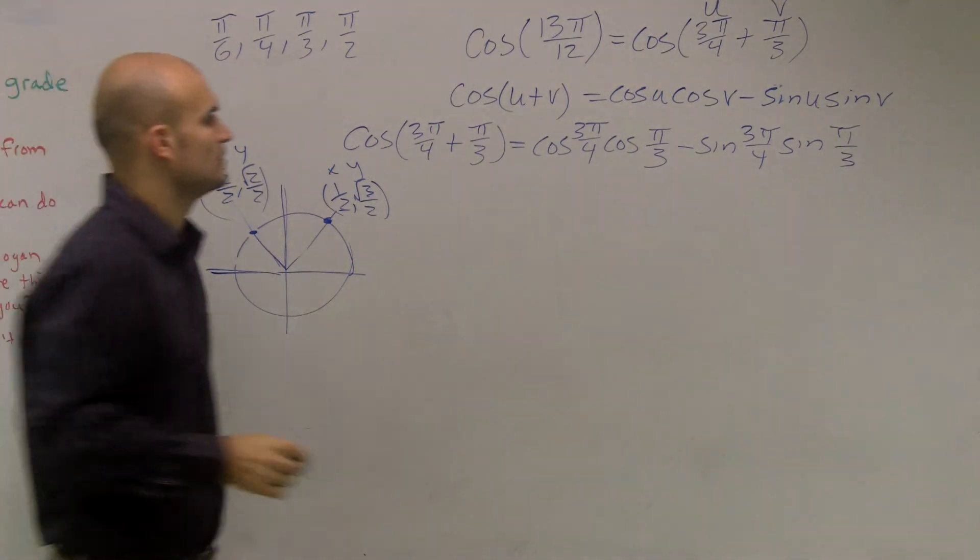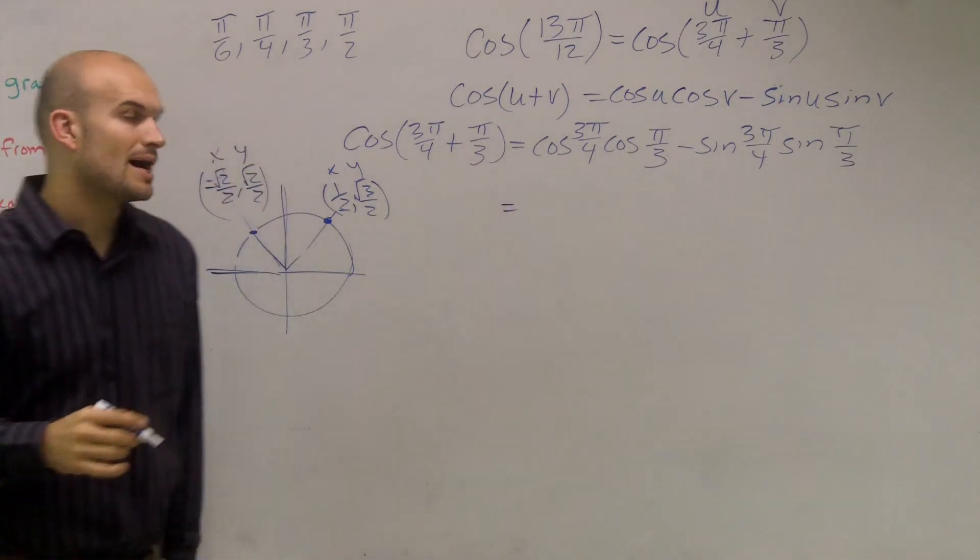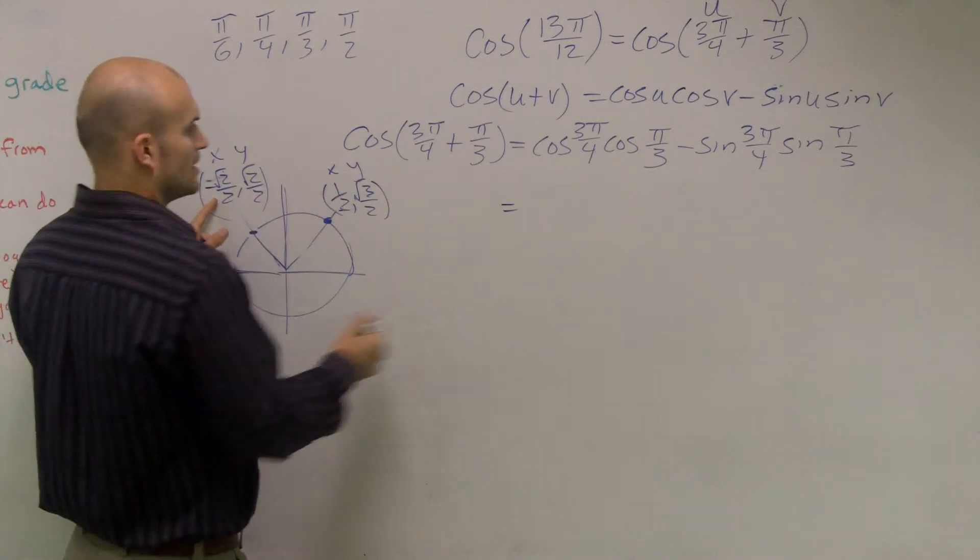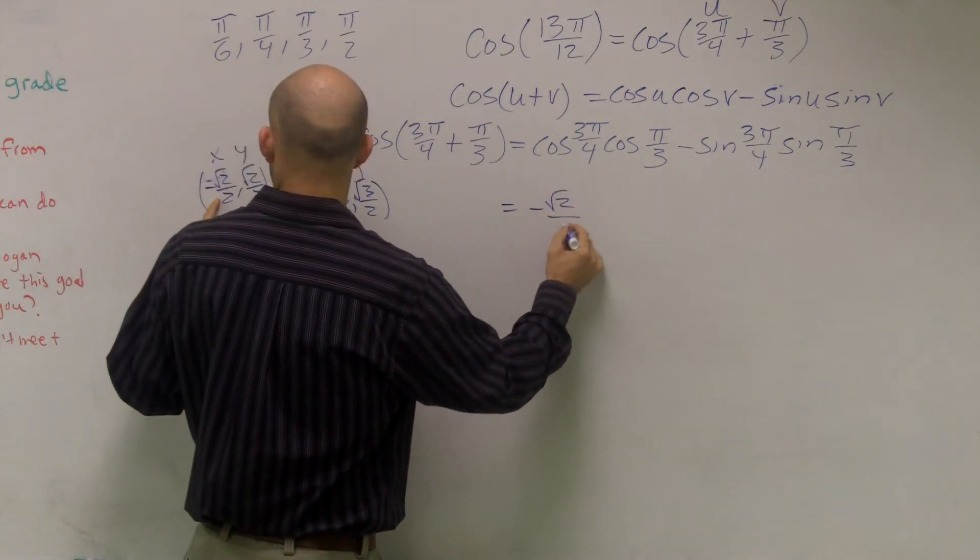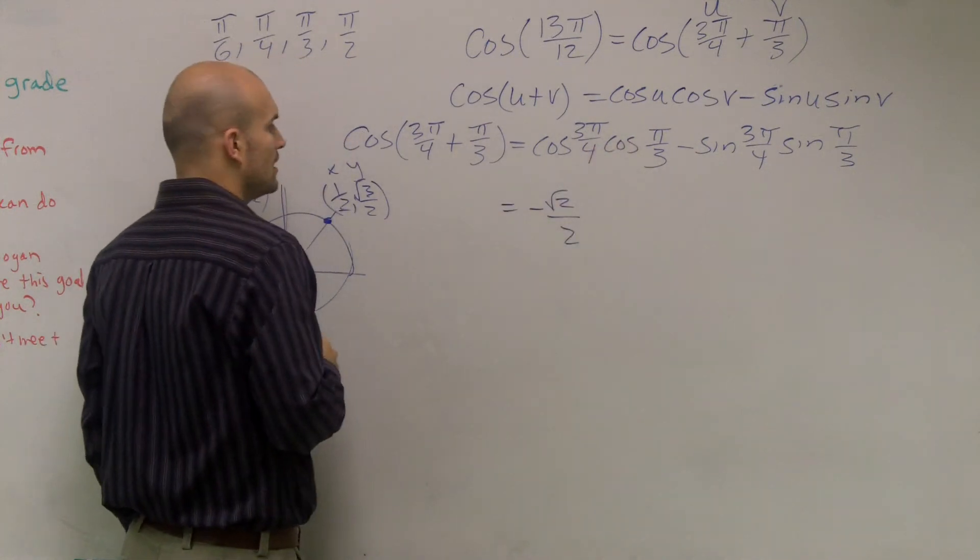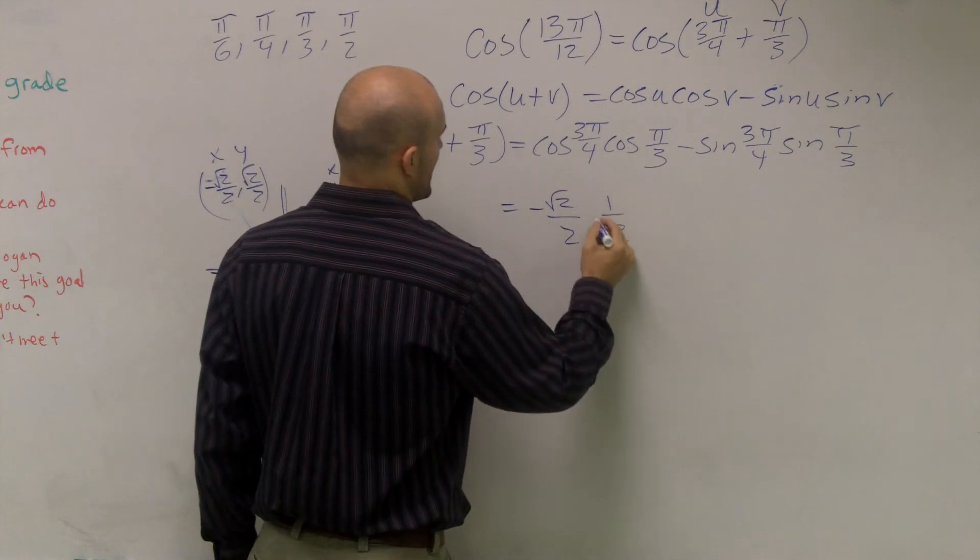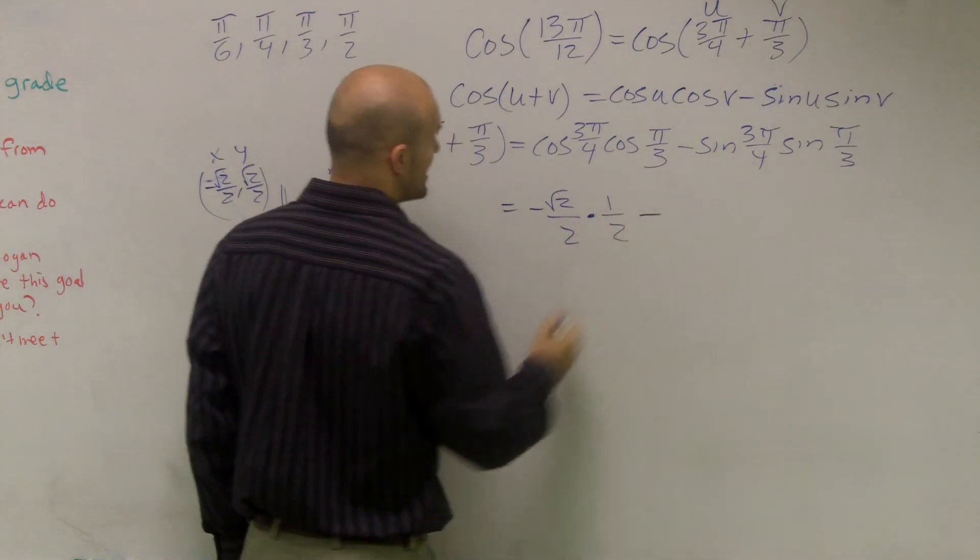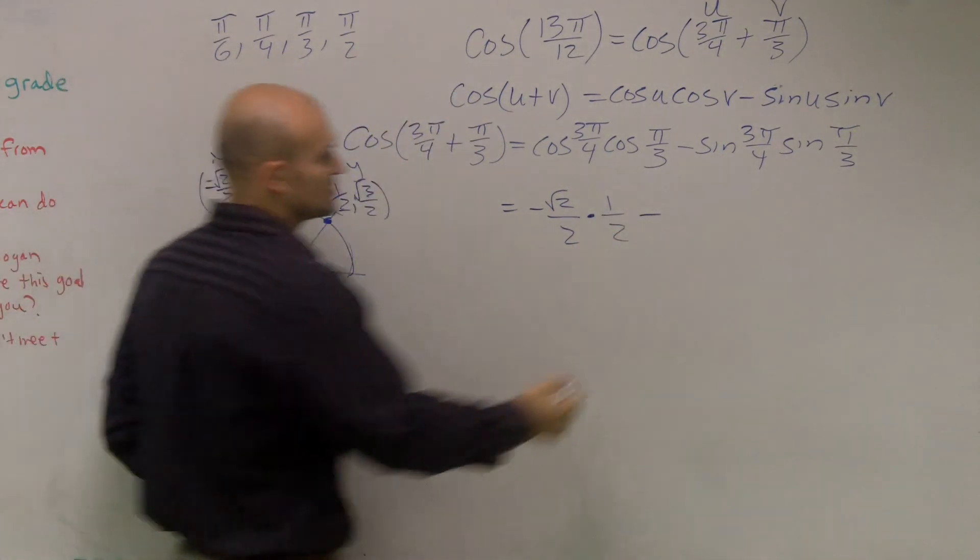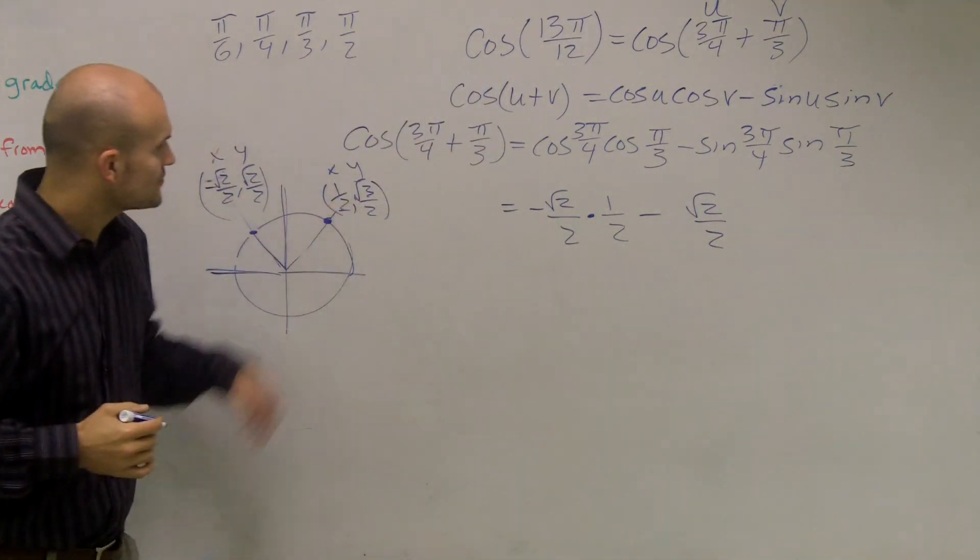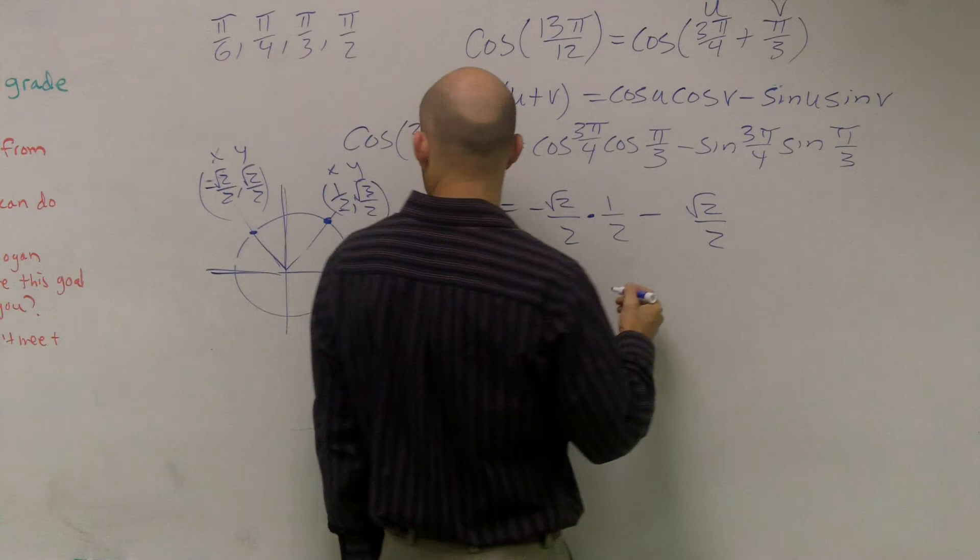So now what I'm going to do to solve for my cosine of 3π/4 is my x coordinate, which is negative √2/2. Cosine of my π/3 is going to be an x coordinate, which is 1/2, multiply those, minus the sine of 3π over 2, which is √2/2, and the sine of this y, which is √3/2.